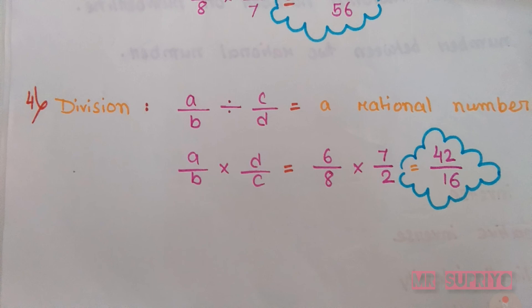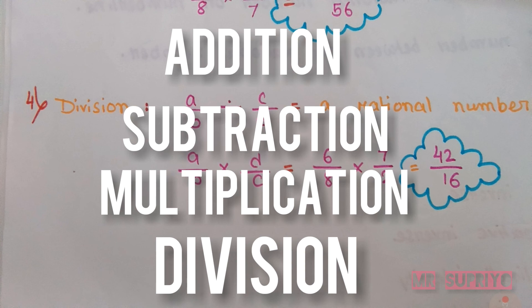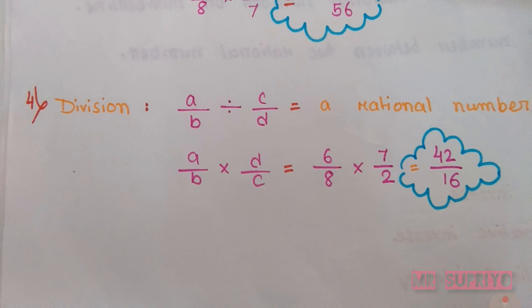So, within the first property of rational numbers — closure — what did we learn? In closure we covered addition, subtraction, multiplication, and division. In all four parts we learned the same concept: in addition, two rational numbers added give a rational number; in subtraction, one rational number minus another gives a rational number; in division, one rational number divided by another gives a rational number. And we did not just learn these conditions — we also proved them by putting in actual values.